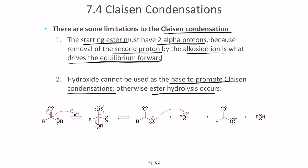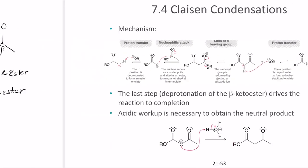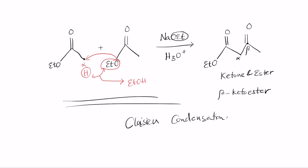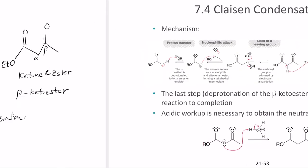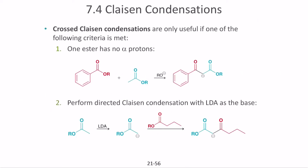Using hydroxide results in ester hydrolysis rather than Claisen condensation. Also, an alkoxide that matches the OR group of the ester is generally needed; otherwise, trans-esterification will occur. Trans-esterification changes the alkoxide group on the carbon rather than forming the desired product. For example, sodium ethoxide is used so that ethoxide is the group that exits. Using any other alkoxide results in trans-esterification, replacing the original alkoxide.